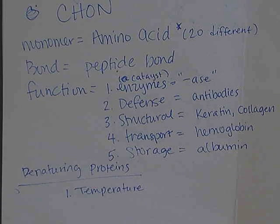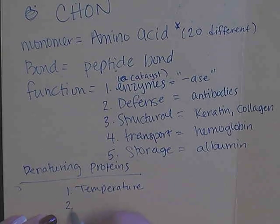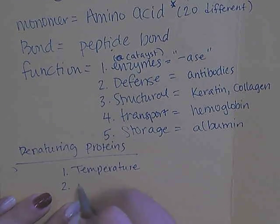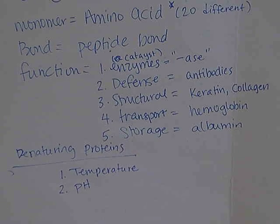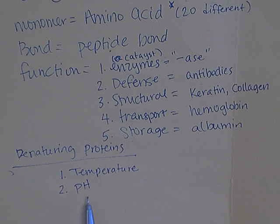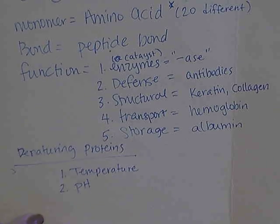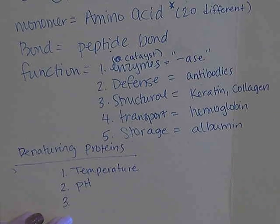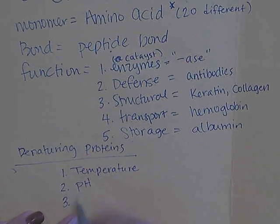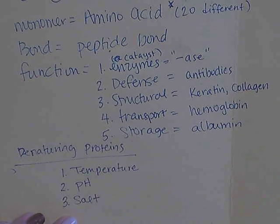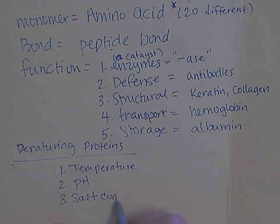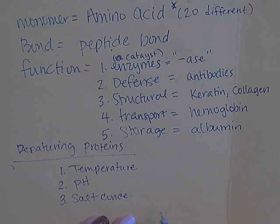When you cook egg whites and expose them to a higher temperature, the proteins denature, and the clear egg white becomes solid and opaque white. A second way to denature proteins is changes in pH — remember that pH is a measure of your hydrogen ion concentration. Exposing proteins to pHs that are too low or too high will render them non-functional. Another way is exposing them to salt concentrations they are not accustomed to.